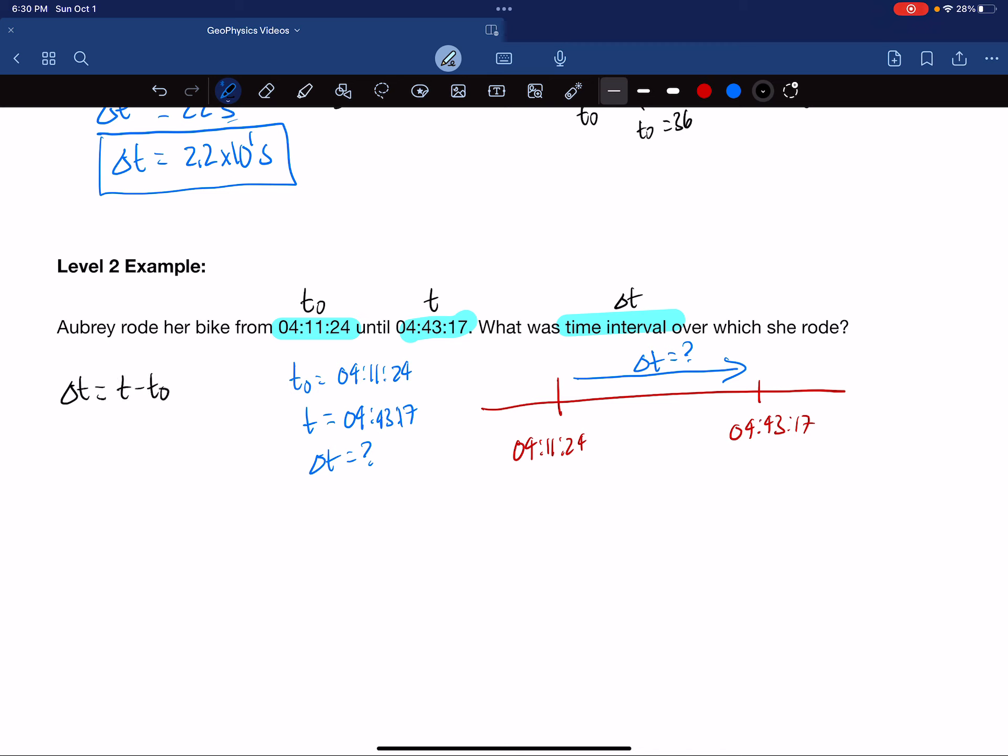Looking at the numbers, we see they're both in the same hour, but different in terms of their minutes and seconds. We have 11 minutes times 60 seconds per minute, and those minutes cancel, leaving us with 660 seconds. Plus there are 24 more seconds, giving us a start time of 684 seconds.